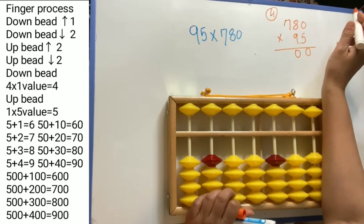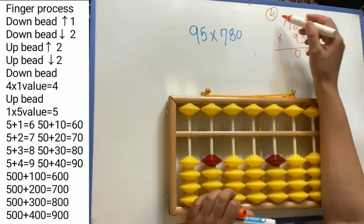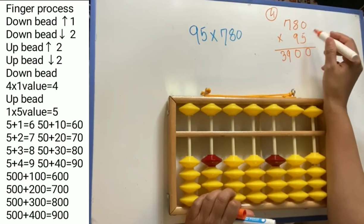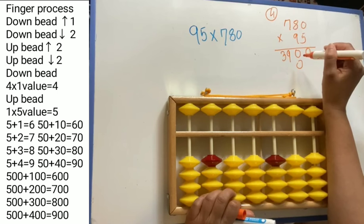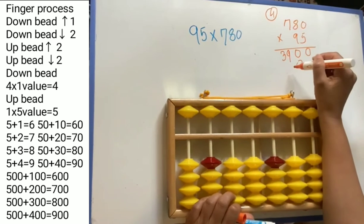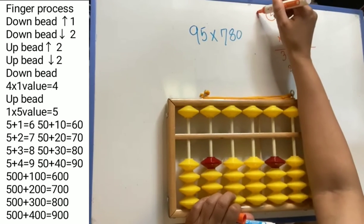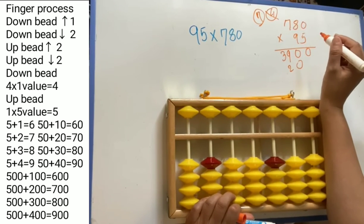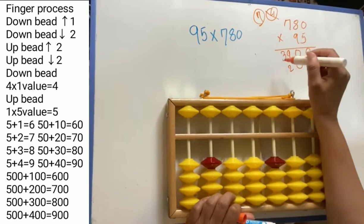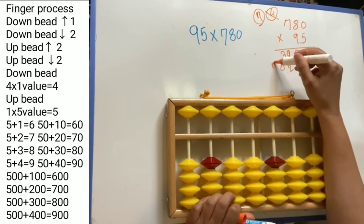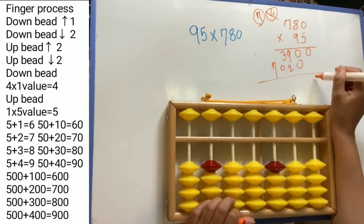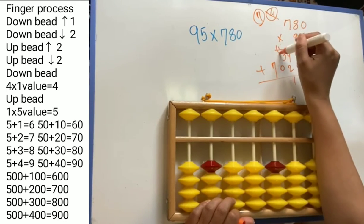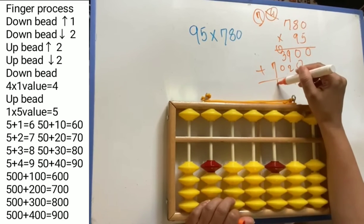Next, 9 × 8 is 72, write 2 here and 7 here. Then 9 × 7 is 63, plus 7 is 70. And for the zero column: 9 × 0 is 0. Adding everything up: 0, 0, and carrying gives us 1, 4, 7. So the answer is 74,100.